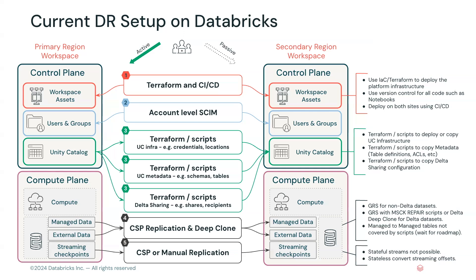Moving down, we have Unity Catalog, and this is where a bulk of the work comes today — and I say today because we're going to be changing that in the near future. For Unity Catalog, we really need to get all of the metadata from Region A to Region B — things like the schemas themselves, permissions, credentials and locations, shares for Delta Sharing, and recipients for Delta Sharing. All of that today is really done via scripts or via Terraform. You can do a centralized Terraform release process, or you can do some scripting to bring the metadata from Region A to Region B. We'll include some examples of this in the Medium blog that's going to be a companion to this video.